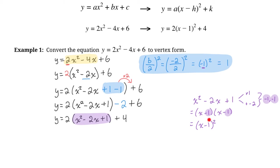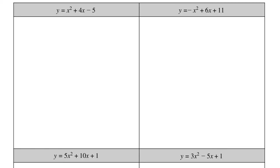The last step is to put the factored form back into our equation, replacing the trinomial. We get y equals 2 times (x minus 1) all squared plus 4. This equation is now in vertex form, and our vertex is at (1, 4).